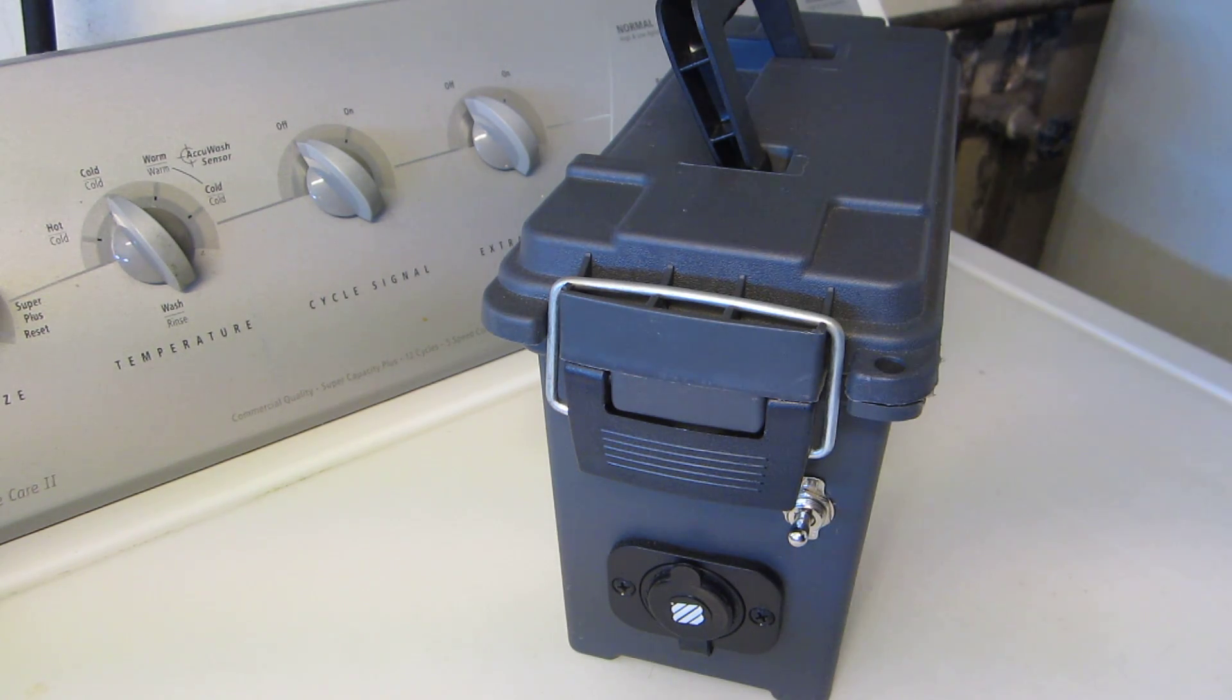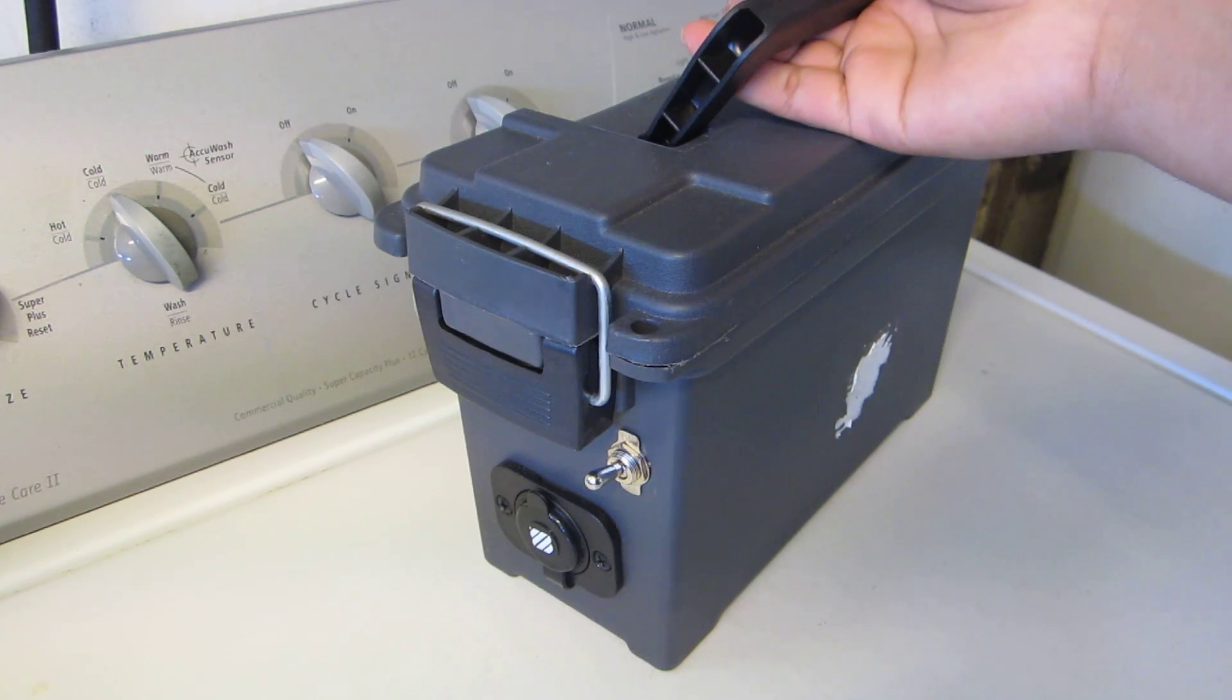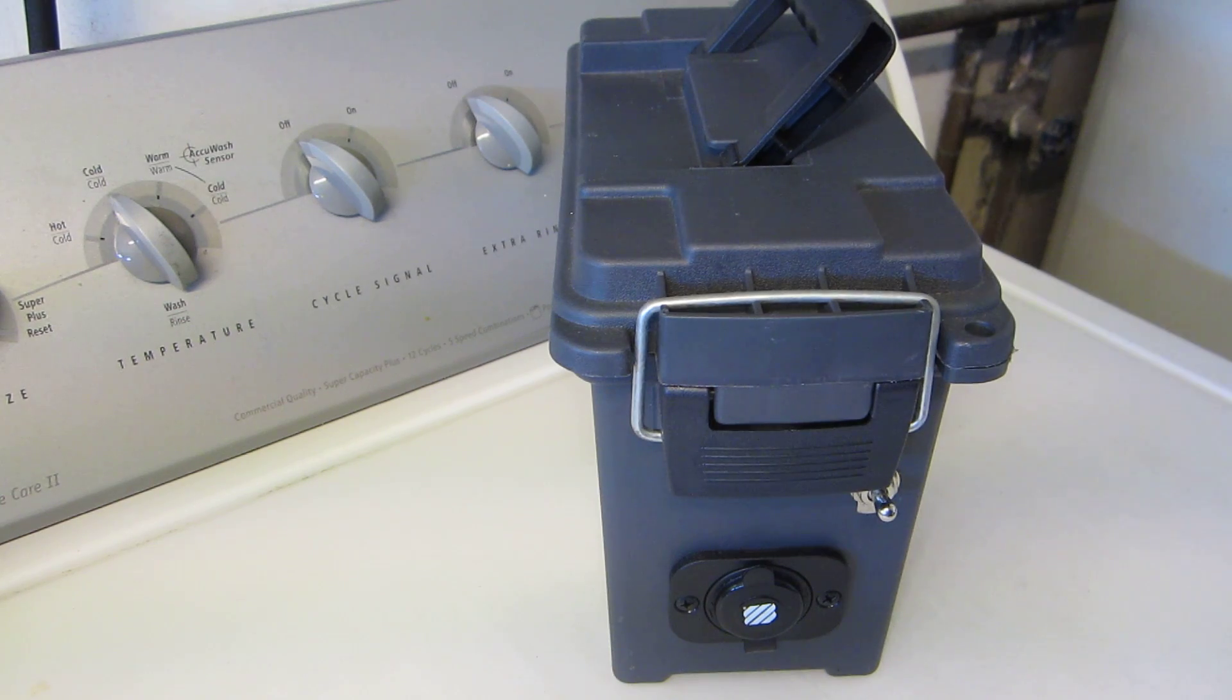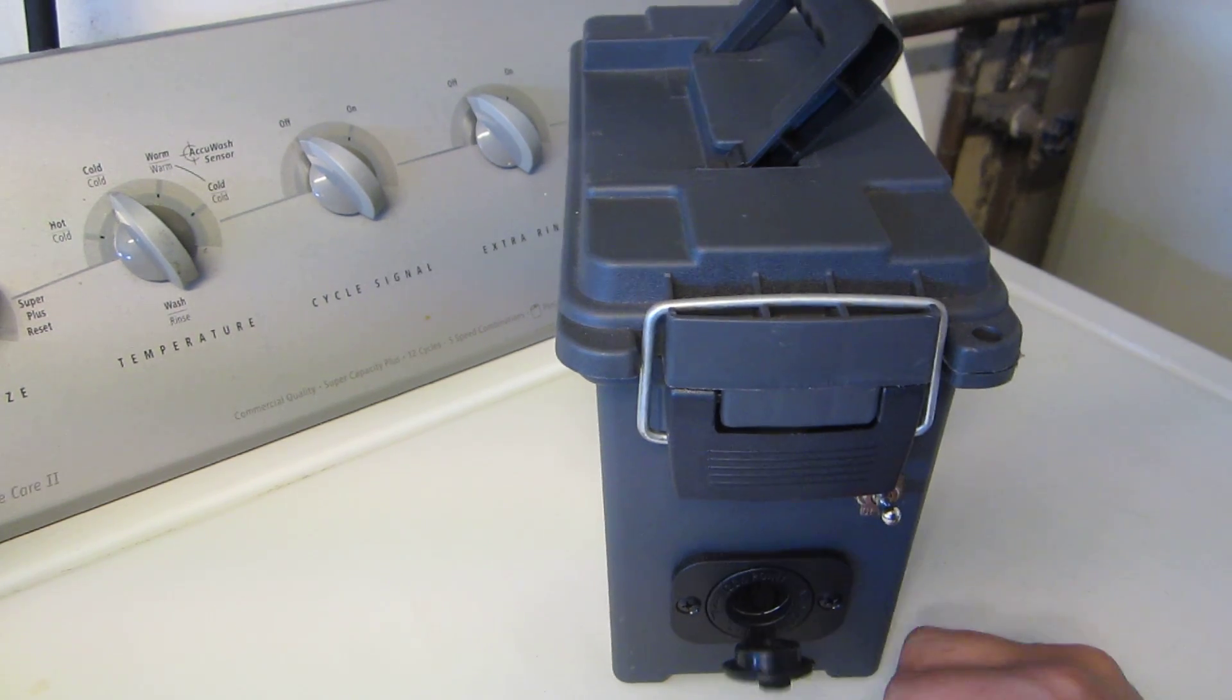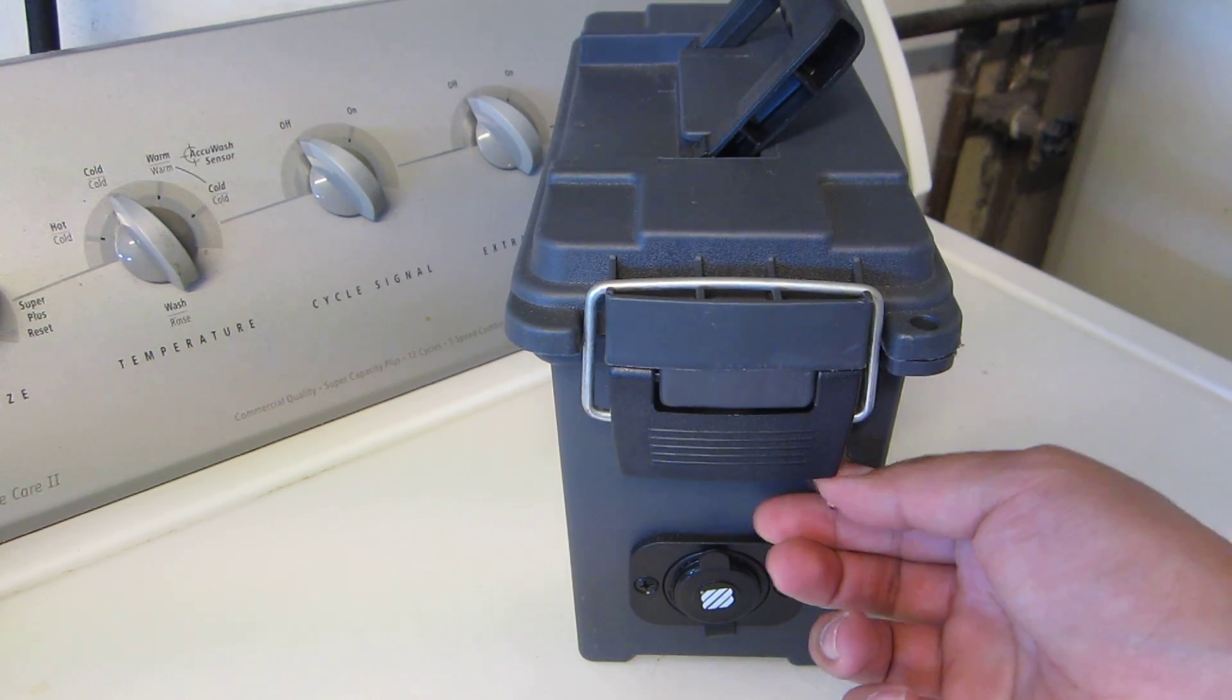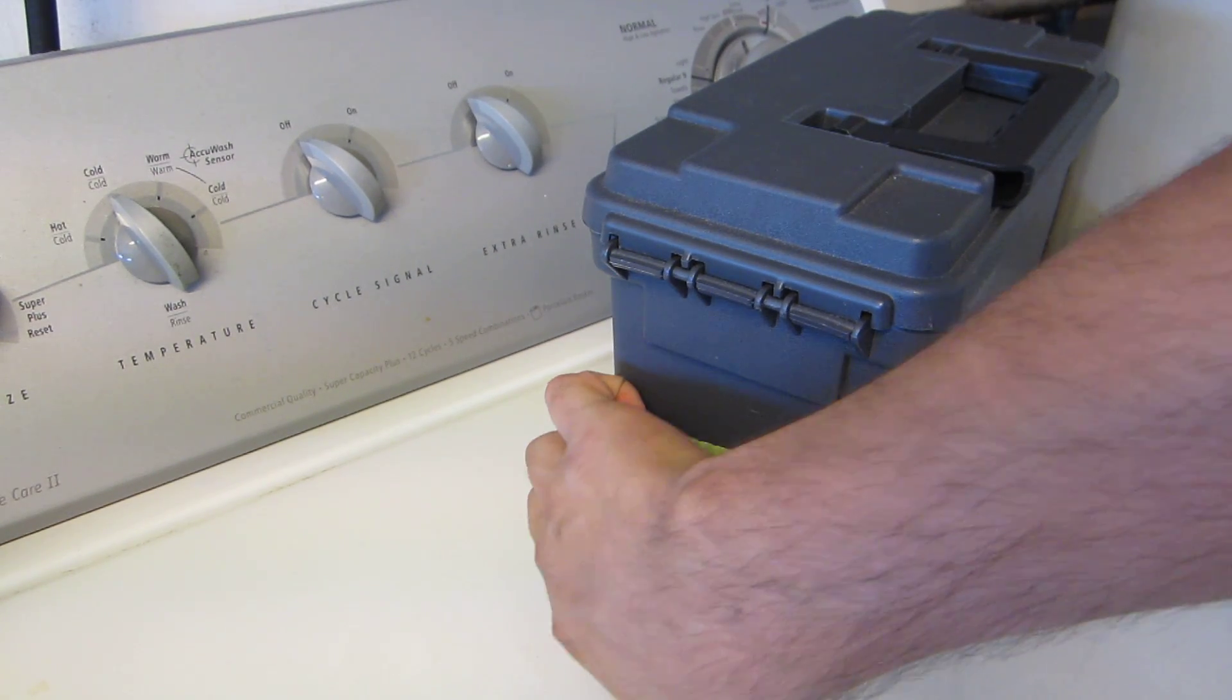It's built inside a plastic ammo box that I got at Harbor Freight tools which was about five dollars. My plan originally was to build it in a pelican case, but for the price you can't really complain. It has a cigarette outlet where I get my 12 volt power, a master on and off switch, and in the back I have a charging port.